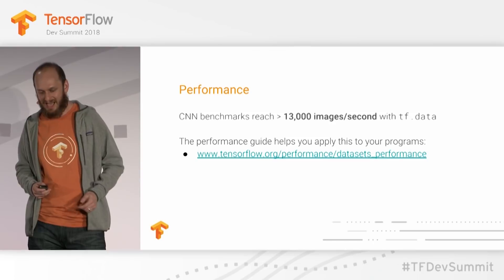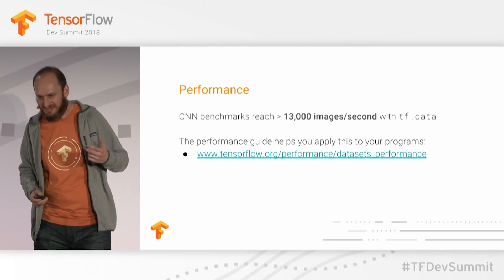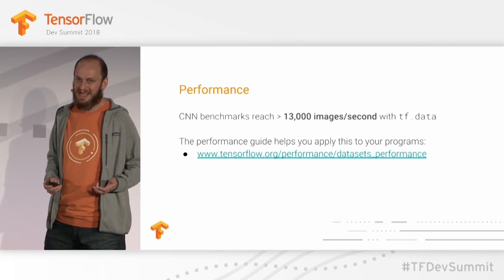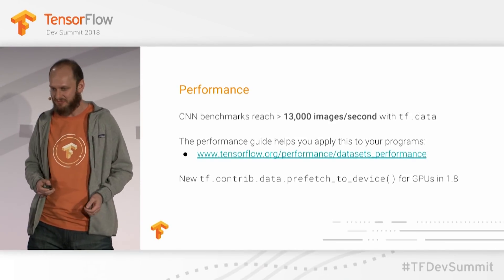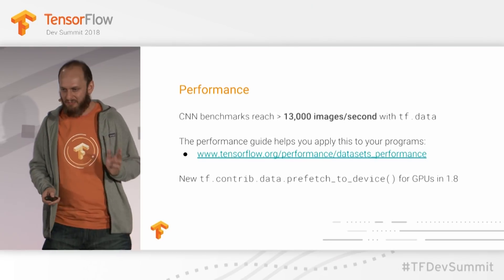A lot of work has gone into performance and we made some announcements about the new performance numbers we're achieving with TF data. This 13,000 images per second number is something we're really proud of, but we also know that we can totally beat it and we're still working to make even further advances. I'm going to be chatting with you in this seat next year and you're going to be saying it's 130,000.